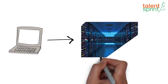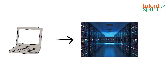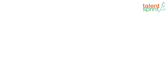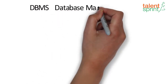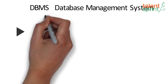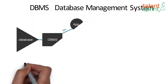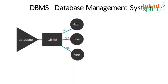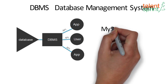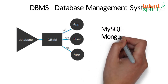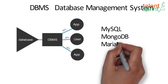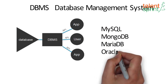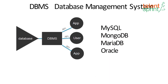When computers came into picture, all this gigantic data from years ago got transferred into databases. A database is simply an organized collection of data, and a DBMS — that is, Database Management System — is a computer software application that interacts with the user, other applications, and the database itself to capture and analyze data. There are multiple well-known DBMS like MySQL, MongoDB, MariaDB, Oracle, etc.